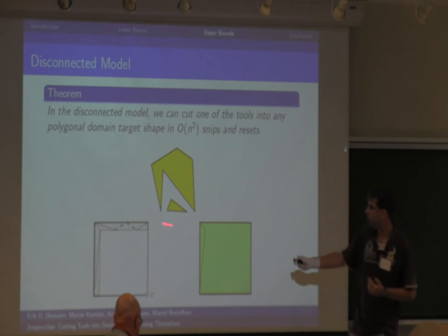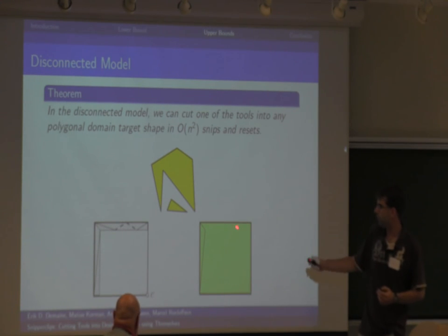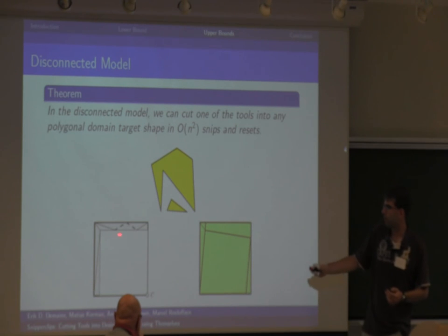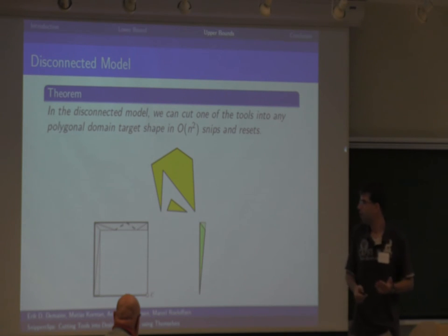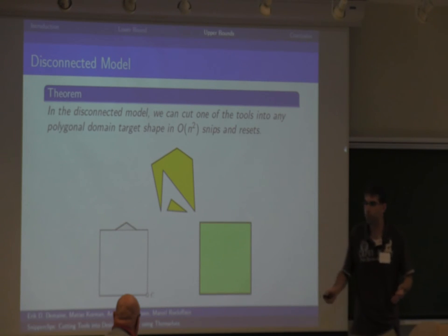Let's look at one of the triangles — I just took the leftmost one over here. You project it onto the other tool, and then you use this large square to essentially remove everything that you don't want to remove from your original square. Because the square is large enough, you can do that in a constant number of operations. Once you have your triangle, you can just remove it from the shape on the left. After that, you reset your tool on the right and you just repeat it for every triangle you want to remove.